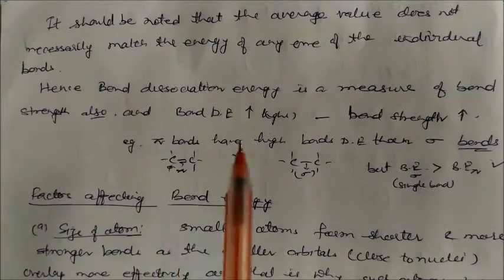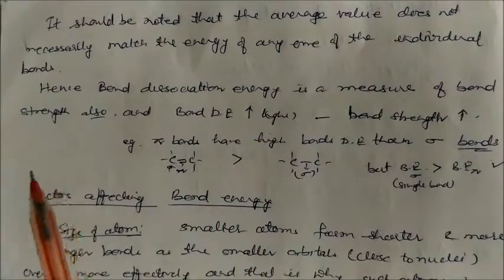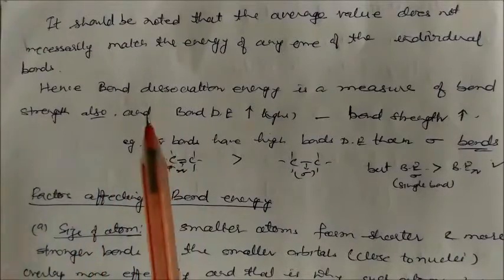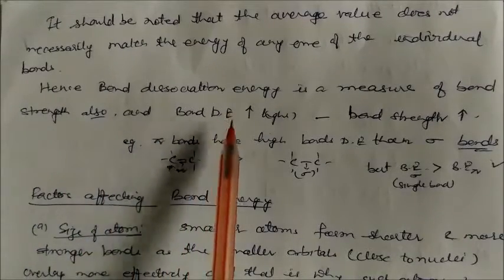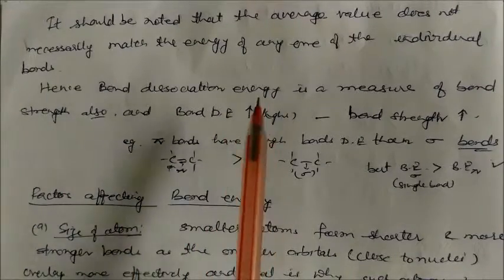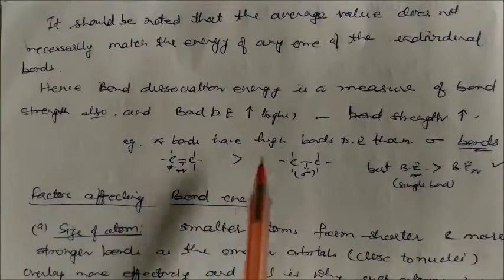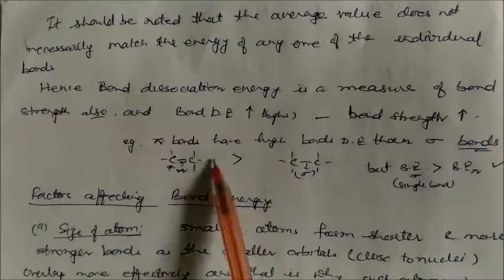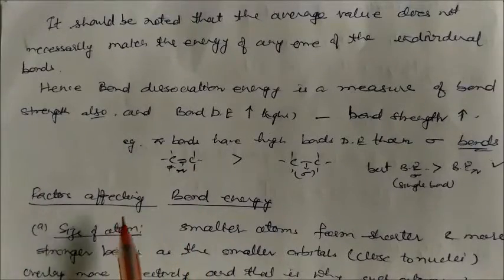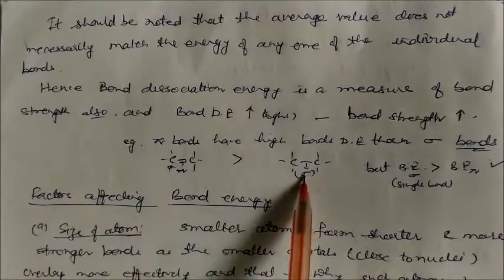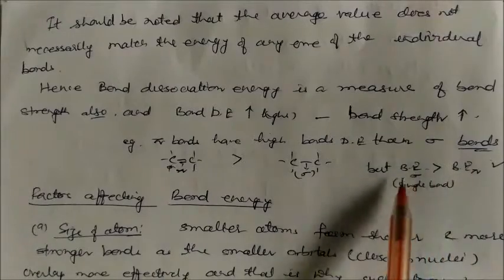It should be noted that the average value does not necessarily match the energy of any individual bond. Bond dissociation energy is a measure of bond strength. When bond dissociation enthalpy is high, bond strength also increases. For example, pi bonds have higher bond dissociation energy than sigma bonds because a double bond contains one pi bond and one sigma bond, so the combined energy is higher.